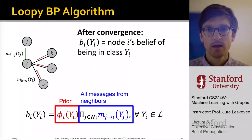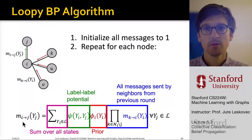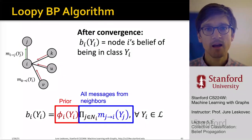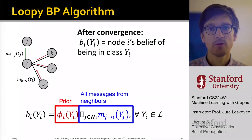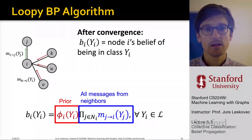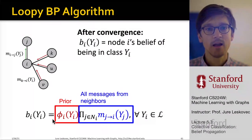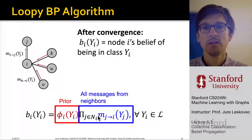We keep iterating this equation until convergence. After convergence, our belief about the probability of node i belonging to class y_i is the product of the prior belief about node i's label, times the messages from all downstream neighbors j about what they think node i's label is. This is the core of how the belief propagation algorithm works.